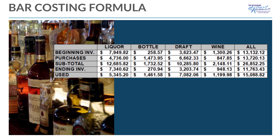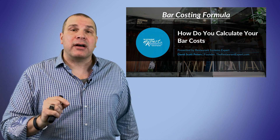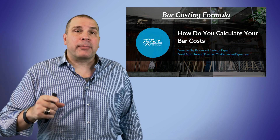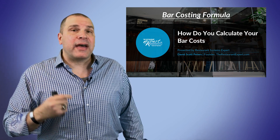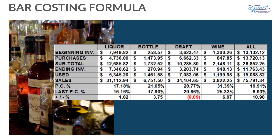It was either sold, spilled, stolen, or broken — the bottle was broken — doesn't matter what it was. This is how much product left the shelves: $2,000 in product. And if I brought in $10,000 in liquor sales and I used $2,000 in product, use divided by sales gives me a 20% liquor cost.